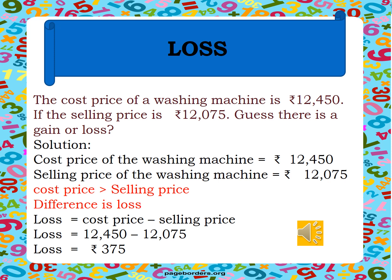Here we are going to see an example for loss. The cost price of a washing machine is Rs. 12,450. If the selling price is Rs. 12,075, guess whether there is a gain or a loss. Solution: The cost price of the washing machine is equal to Rs. 12,450 and the selling price of the washing machine is equal to Rs. 12,075.